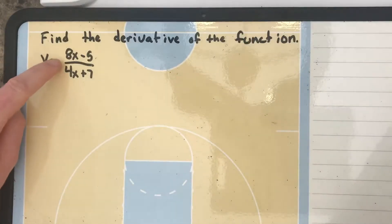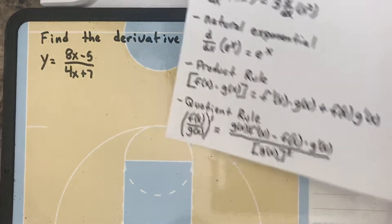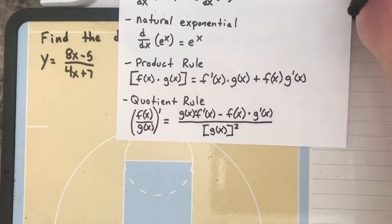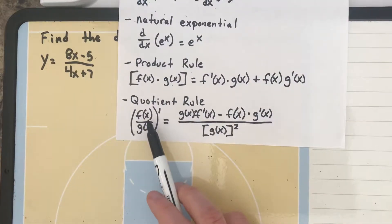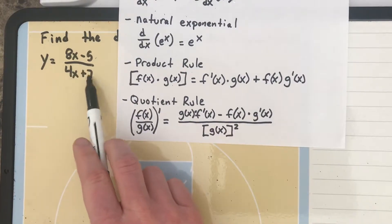That tells us because we have a division that we're going to need to use the quotient rule. And you can see the quotient rule here is if you have two functions being divided, which we do, 8x minus 5 and 4x plus 7.